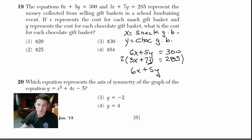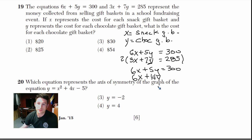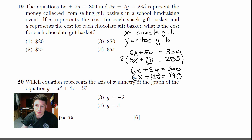Rewriting: top equation stays as 6x plus 5y equals 300. Bottom equation becomes: 2 times 3x equals 6x, 2 times 7y equals 14y, 2 times 285 equals 570. Now I subtract the equations: 6x minus 6x cancels out, 5y minus 14y equals negative 9y.